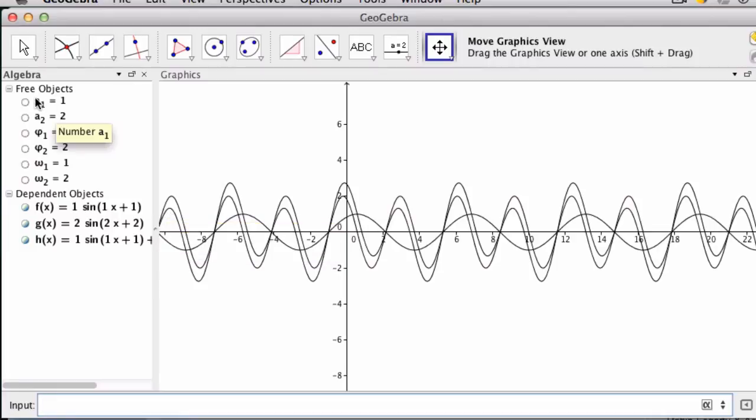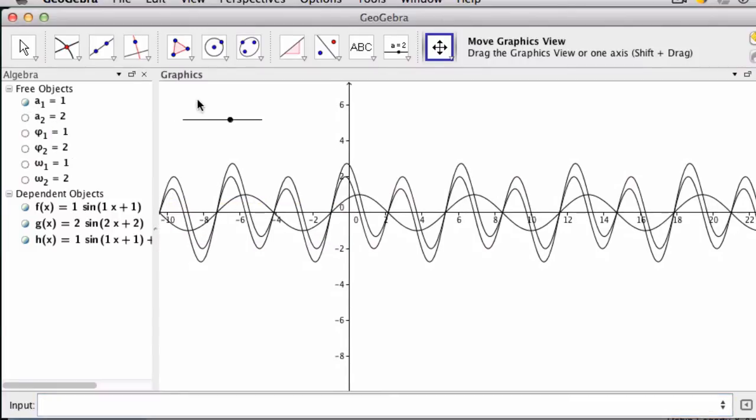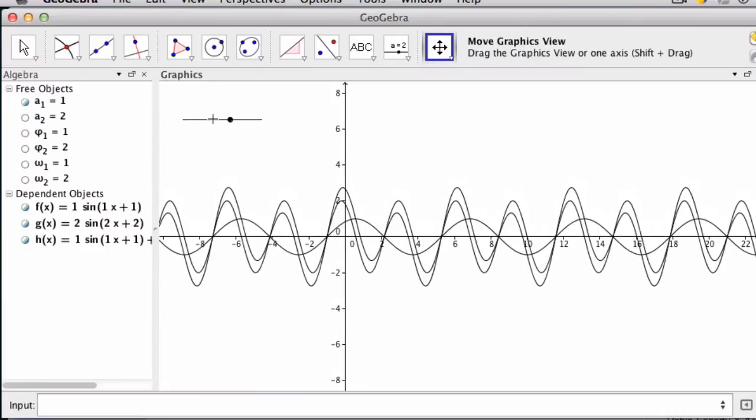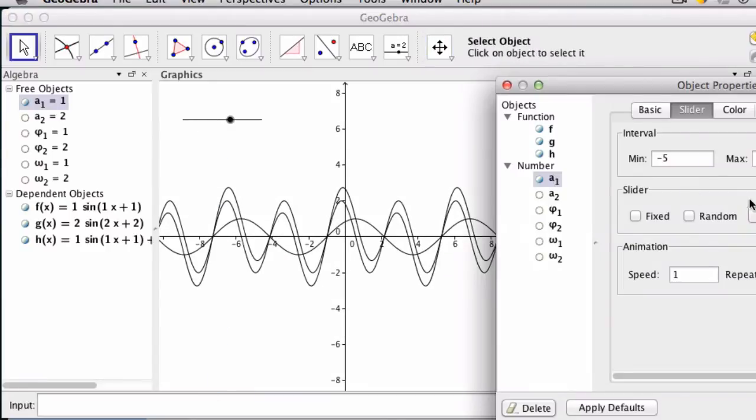So what I'm going to do is create some sliders to mess with our variables over here. So we have, there's our first amplitude. And I think it's important with these to make sure